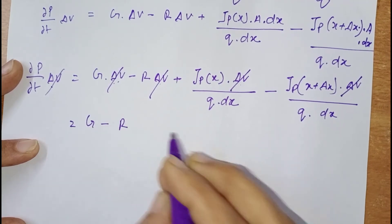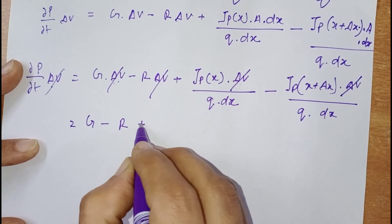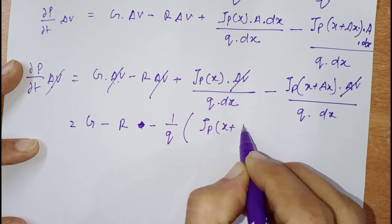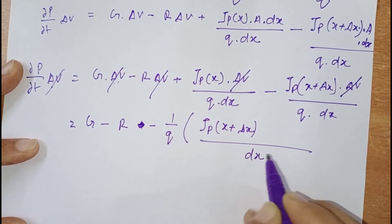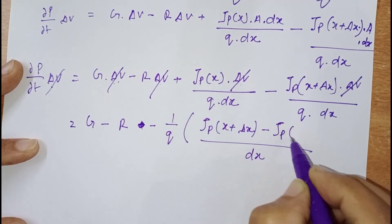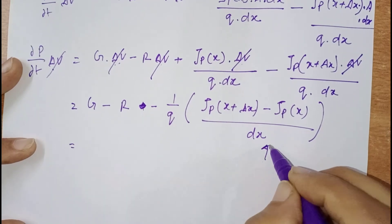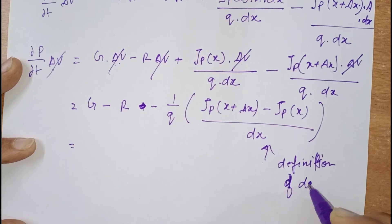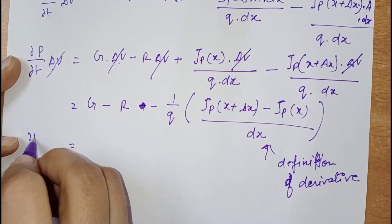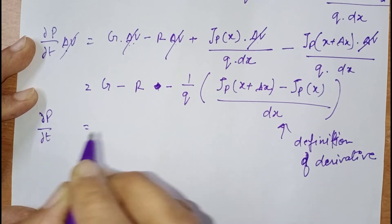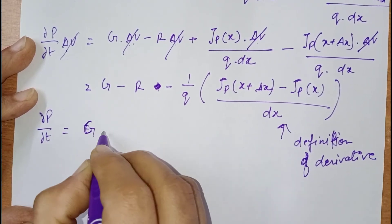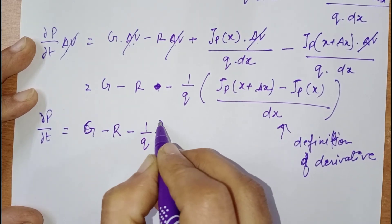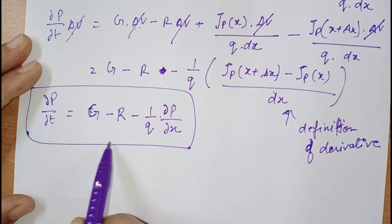What remains is: generation minus recombination, plus (−1/q) times [jp(x+Δx) − jp(x)] / Δx. We recognize this bracketed expression as the definition of a derivative. So we can write: ∂p/∂t = generation − recombination − (1/q)·(∂jp/∂x). This is the continuity equation for holes.